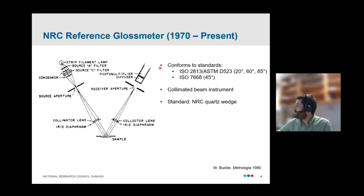A few other notes about our instrument. This instrument's designed to conform to ISO 2813 and ASTM D523, as well as ISO 7668, which includes this additional 45 degree angle of incidence. It's a collimated beam instrument, and as our standard, we use these NRC quartz wedges that Clarence described. And so, in a standard measurement, we would make a recording with our test sample, and then we would swap in our quartz wedge in order to obtain an absolute gloss reading.